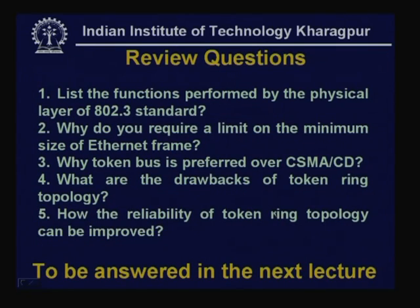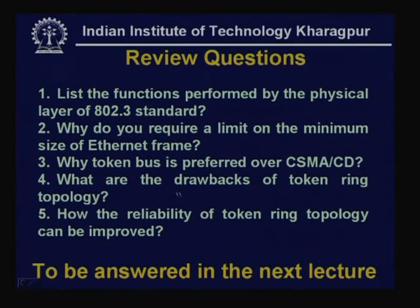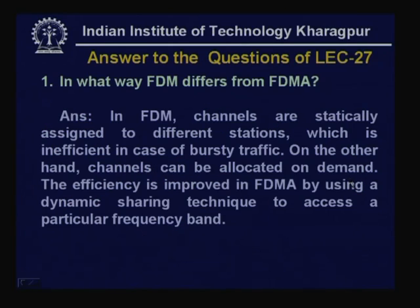Here are the review questions: (1) List the functions performed by the physical layer of the 802.3 standard. (2) Why do you require a limit on the minimum size of an Ethernet frame? (3) Why is token bus preferred over CSMA/CD? (4) What are the drawbacks of token ring topology? (5) How can the reliability of token ring topology be improved? These questions will be answered in the next lecture.